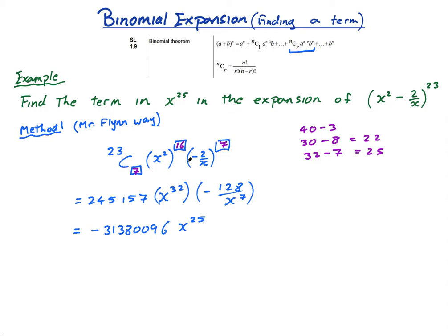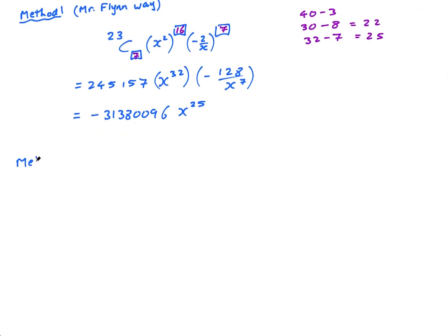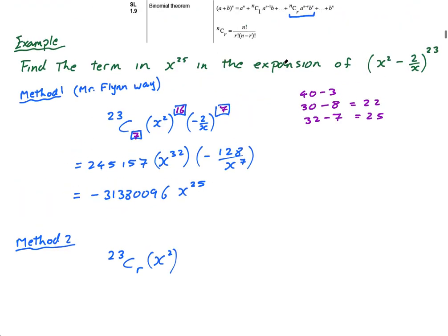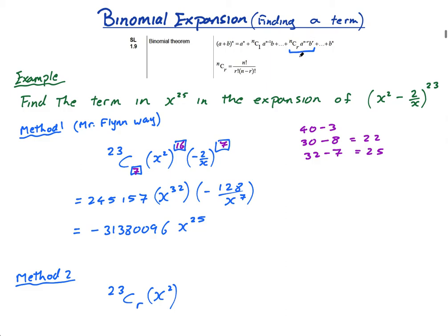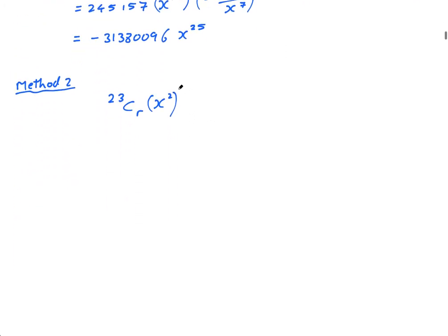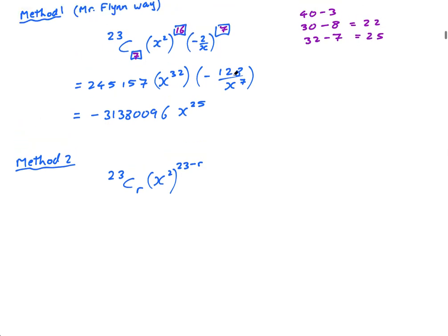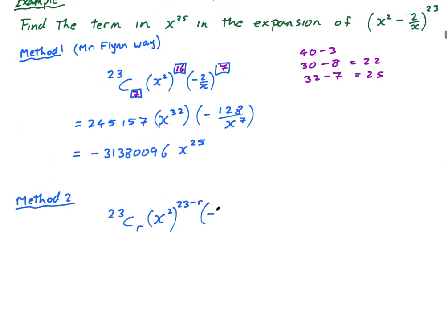That's method 1, Mr. Flynn's way. Method 2 is the slightly more technical way. And you can choose. I have no problem if you prefer to do it this way. What we do is we say it's 23 choose r. We say x^2 to the power of n minus r, which is 23 minus r. And the second term is -2/x to the power of r.